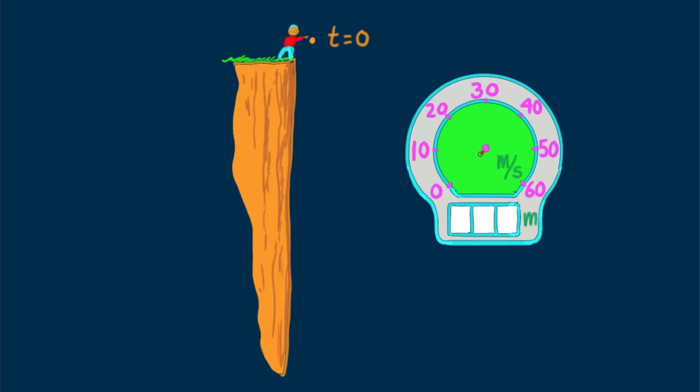We start from rest, so the speedometer reading begins at zero. This is our initial speed. Our speedometer also has an odometer that measures distance traveled. Its reading is set to zero at the time equals zero mark.